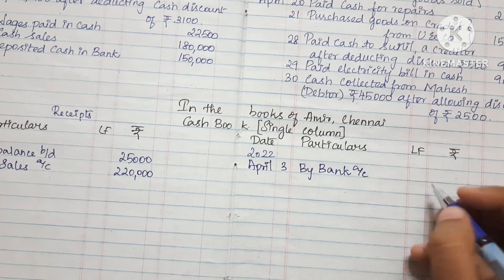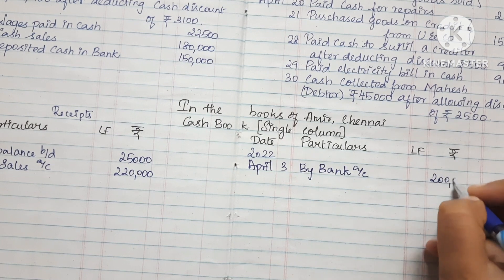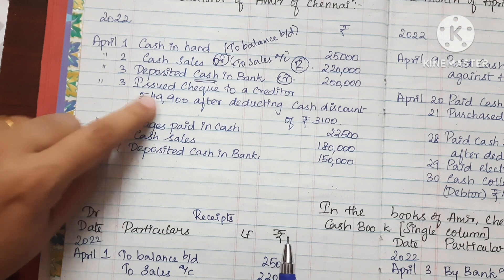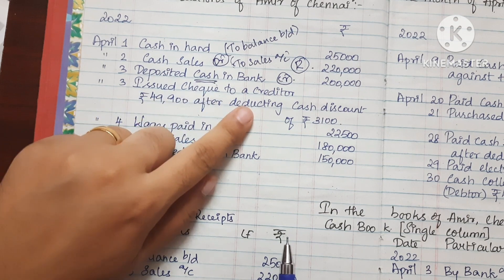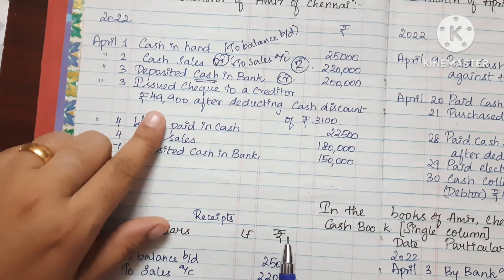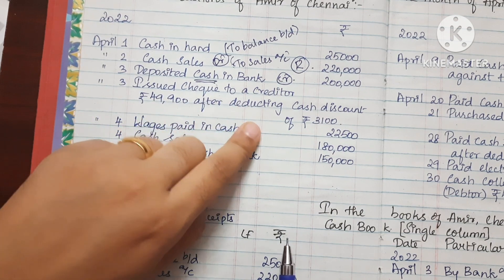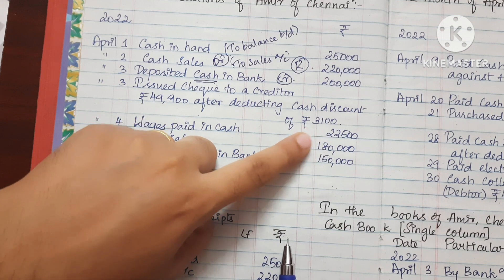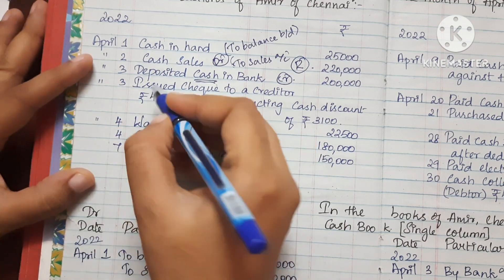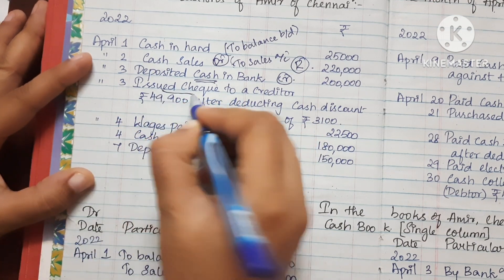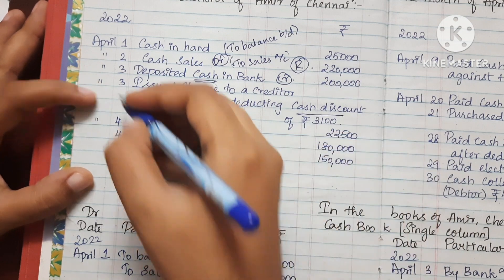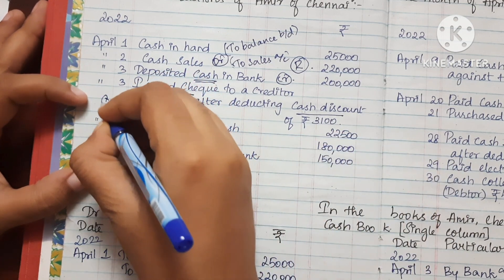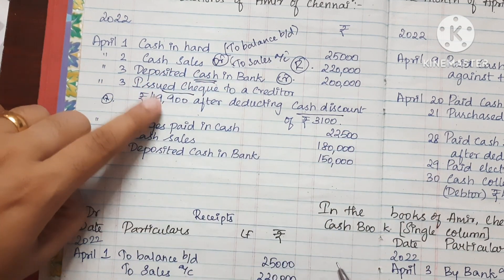The next transaction is: issued a check to a creditor for Rs. 49,900 after deducting a cash discount of Rs. 1,300. We will enter this transaction as well — the amount is Rs. 20,00,000 on the bank side.